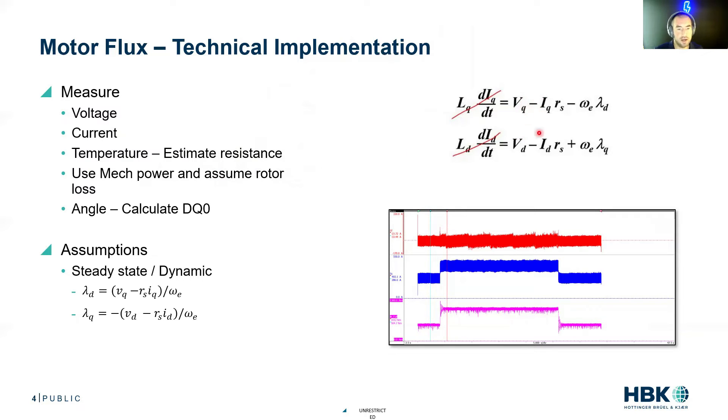To get to VD, VQ, ID, IQ, we need to measure angle, so we can do our transforms. But these are actually all pretty simple measurements, nothing scary yet.